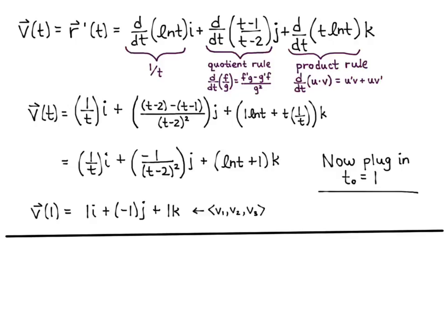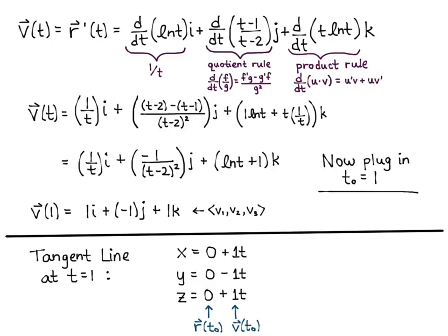Now I put it all together into the parametric equations for a line. So the tangent line at t equals 1 is x equals 0 plus 1t, y equals 0 minus 1t, z equals 0 plus 1t. And the 0, 0, 0 came from r of t₀. The 1, negative 1, 1, all attached to t's came from the velocity at t₀. And this simplifies to x equals t, y equals negative t, z equals t.